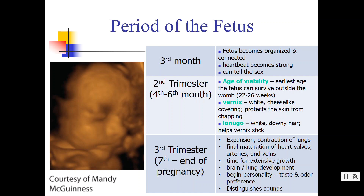The age of viability — the earliest chance an organism can be born and survive — is sometime between 22 to 26 weeks, which is around the end of the sixth month into the seventh month. If a full-term pregnancy is 38 to 42 weeks, then 22 weeks is only about halfway. This shows why that's the earliest chance of survival — it doesn't necessarily mean an organism born at that time will actually survive.